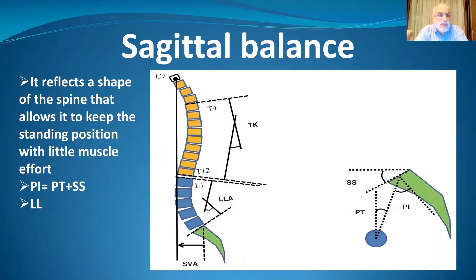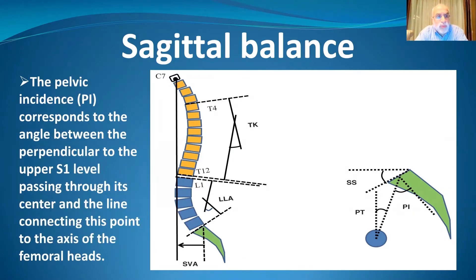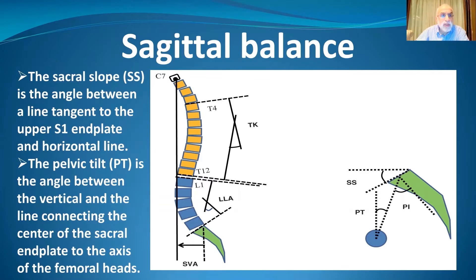Sagittal balance reflects the shape of the spine that allows it to maintain the standing position with the least muscle effort. Pelvic incidence equals pelvic tilt plus sacral slope, and we also have lumbar lordosis — these are the four important parameters of sagittal balance. Pelvic incidence corresponds to the angle between the perpendicular to the upper S1 endplate passing through its center and the line connecting this point to the axis of the femoral head. Sacral slope is the angle between a line tangent to the upper S1 endplate and a horizontal line. Pelvic tilt is the angle between the vertical and the line connecting the center of the sacral endplate to the axis of the femoral head.